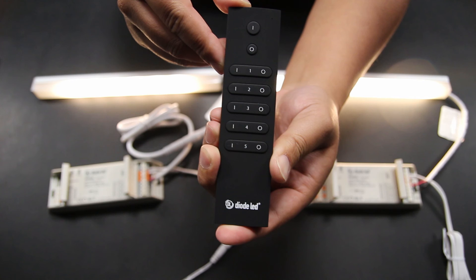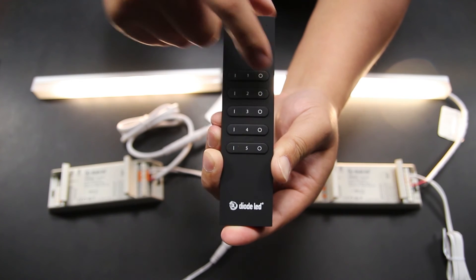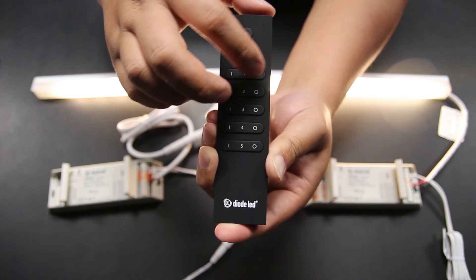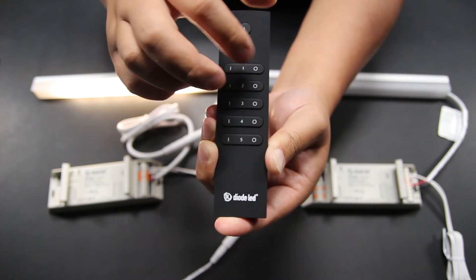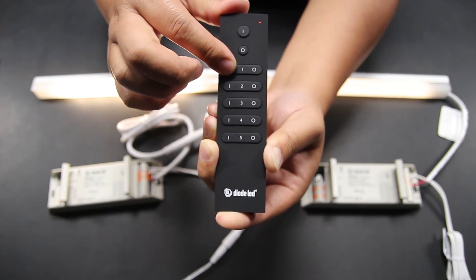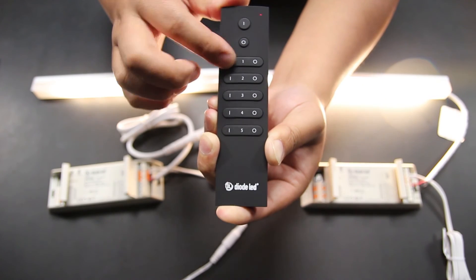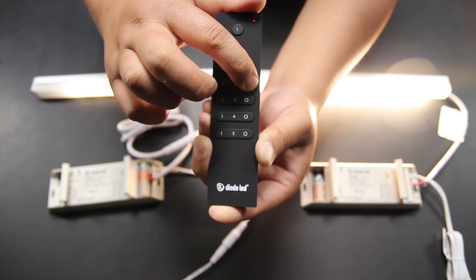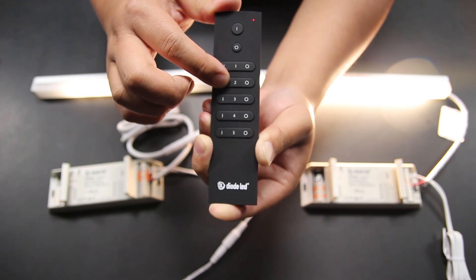Below the master function keys are the five zone keys, as mentioned previously. The right side of each key is labeled O and works as a dimmer, and the I on the left side of each key increases brightness. Pressing and holding the individual buttons will apply the action to that particular zone.